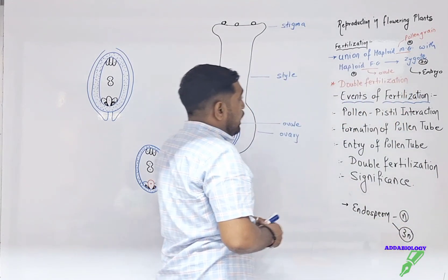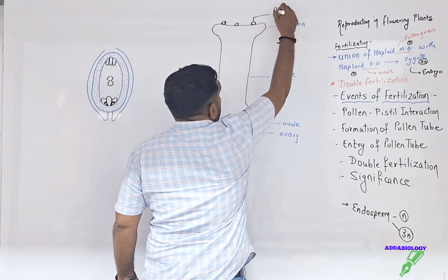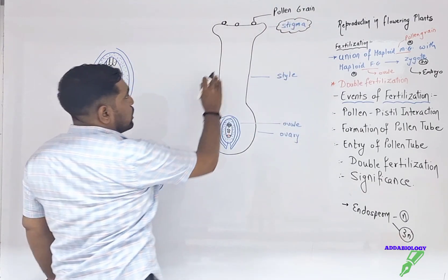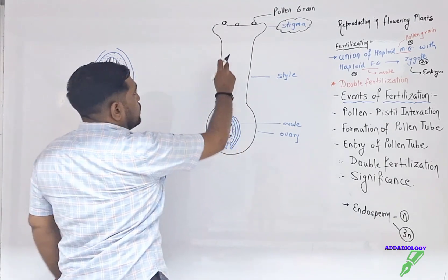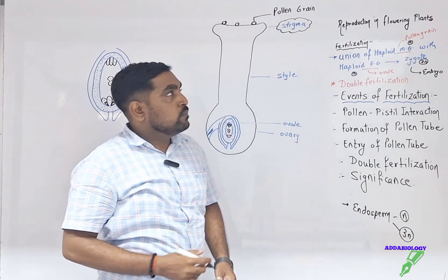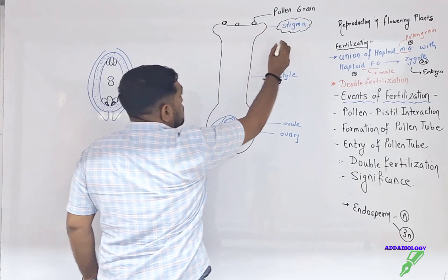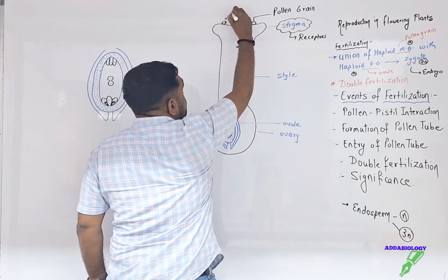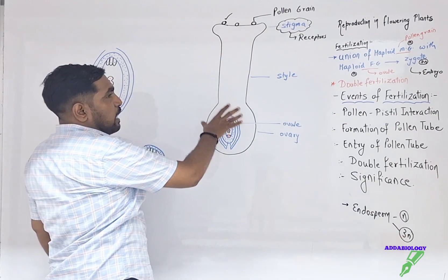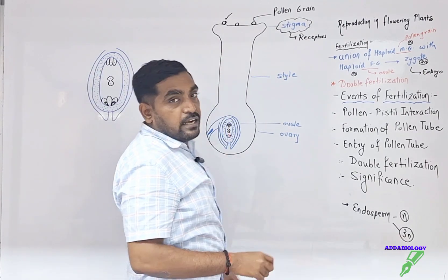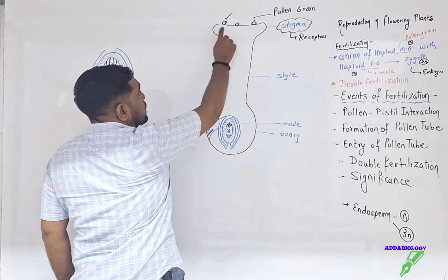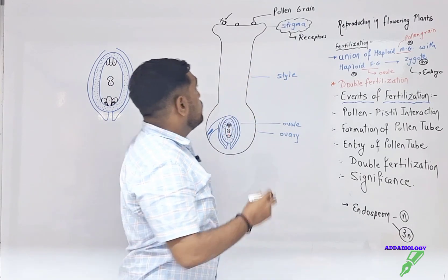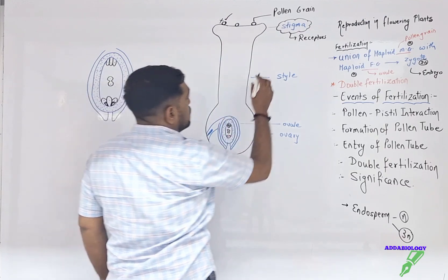What happens when there is pollen-pistil interaction? The pollen grain lands on the stigma, but there is no guarantee that the pollen grain and the gynoecium are of the same species — they can be of different species. The stigma has receptors, and these receptors must match with the receptors of the pollen grain. For example, if the gynoecium is of a mango flower and the pollen grain that has landed is from a chiku plant, the stigma will provide no opportunity for that pollen grain to develop.